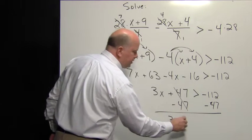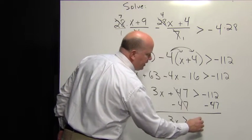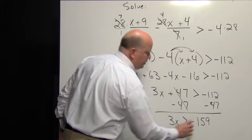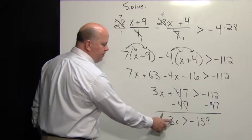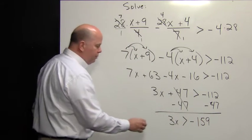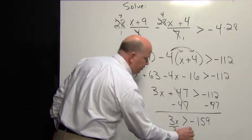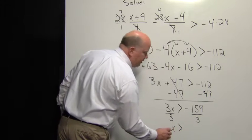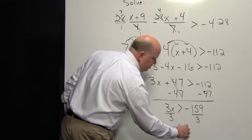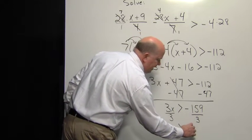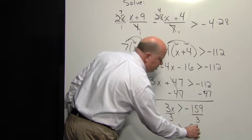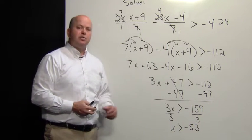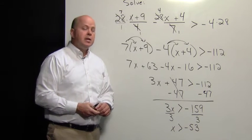We have a coefficient of X which is 3. We want to divide both sides by 3. 3 goes into 15 five times, and 3 goes into 9 three times, giving us 53. So our solution set is X is greater than negative 53.